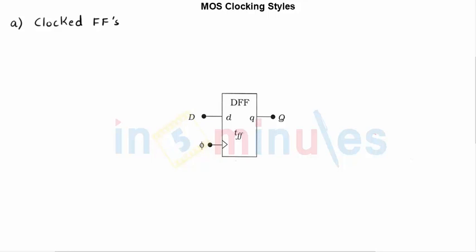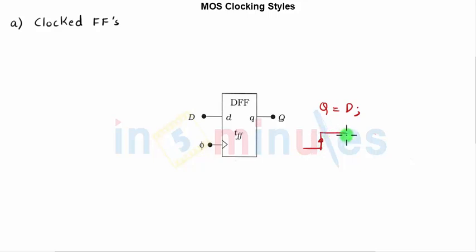Let's understand clocked flip-flops. Here on the screen I have shown a D flip-flop. We have already studied this transistor-level diagram in different styles of this D flip-flop. It's a positive edge-triggered flip-flop, so when phi equals 1, Q equals D after some propagation delay. It will start its operation when phi is equal to 1.